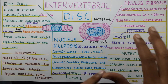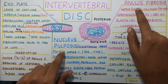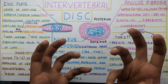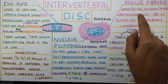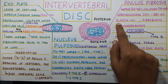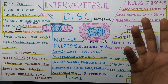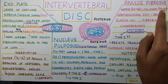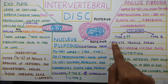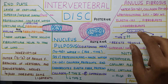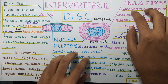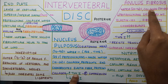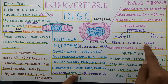The annulus fibrosus has 60 to 70 percent water — less than the nucleus pulposus. Because water is less, proteoglycans are also less, since proteoglycans are what hold water. There is also 10 percent elastin, fibroblasts, and chondroblasts, which are less significant. The main component here is 50 to 60 percent collagen, and the collagen type is type 1, which helps in resisting tensile or distractive forces.